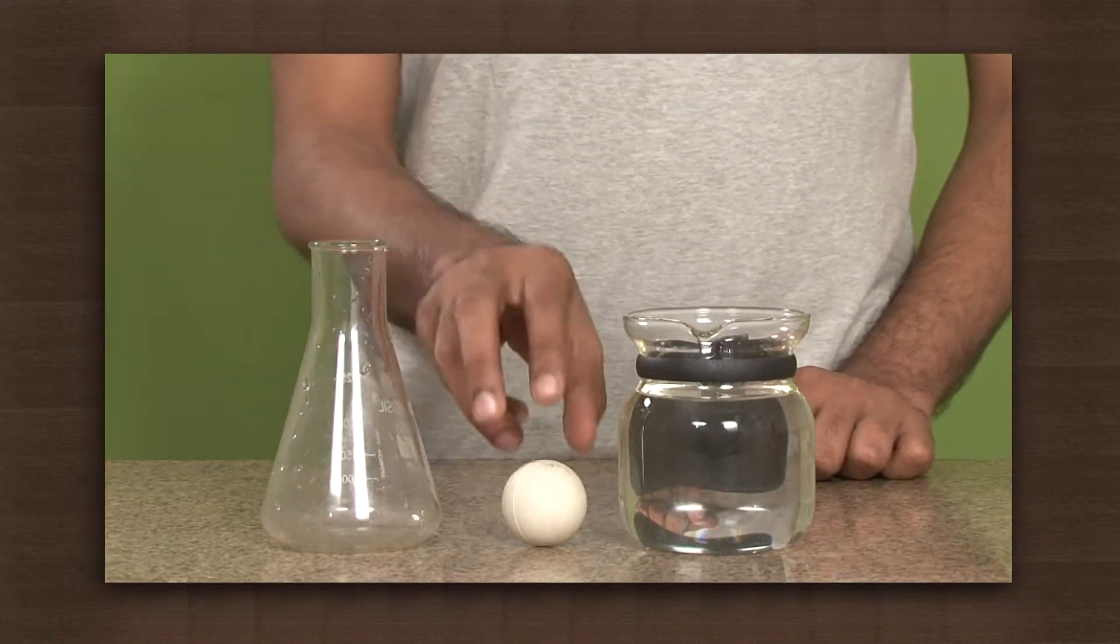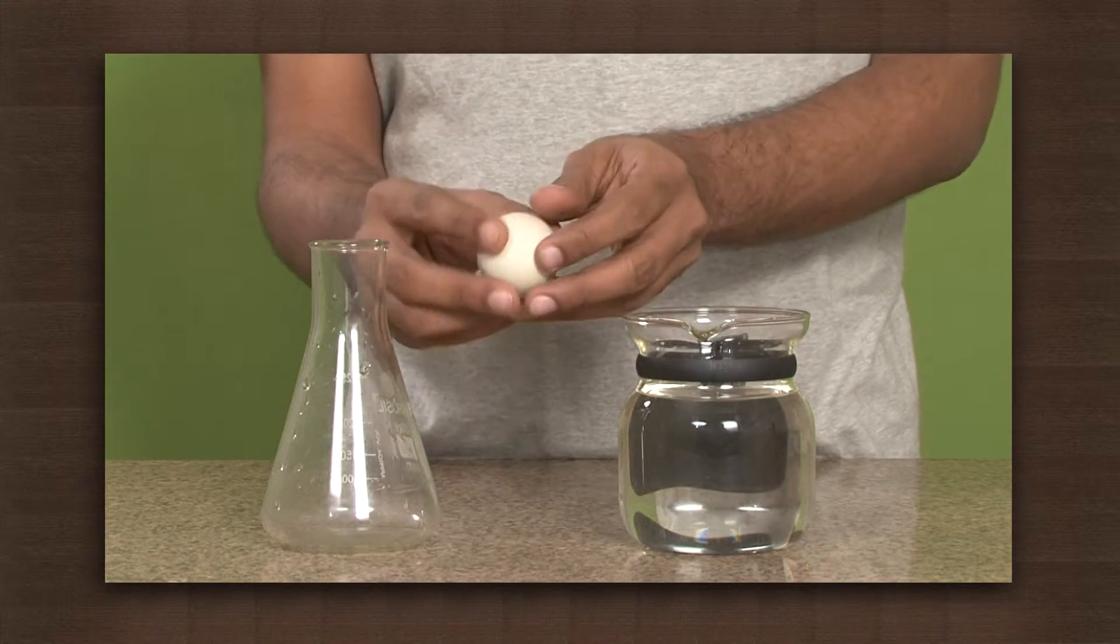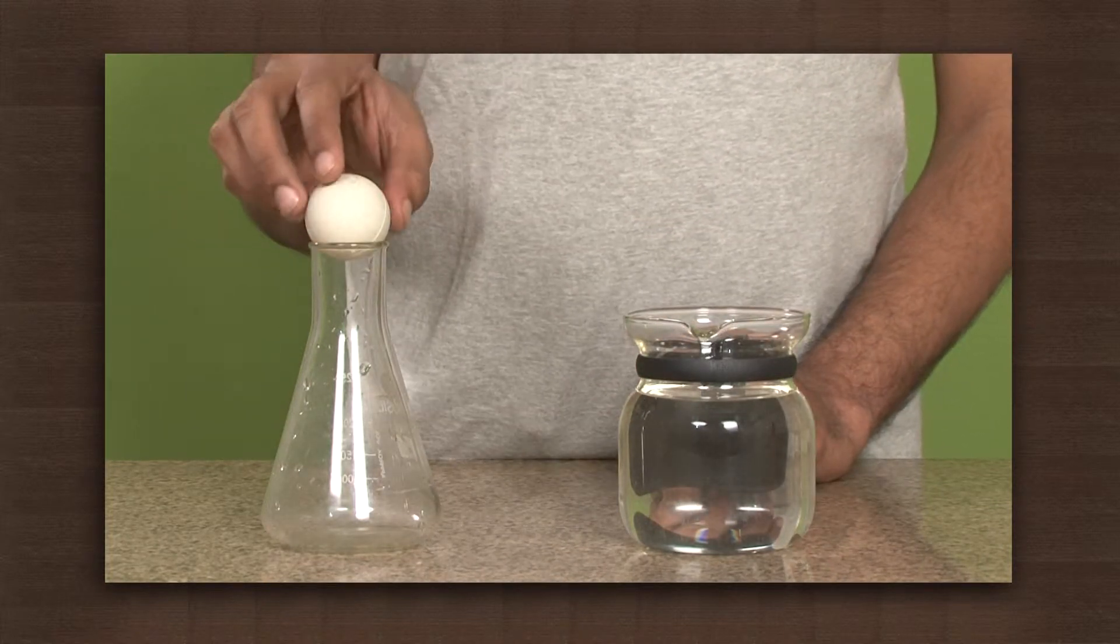We will take a wide mouth bottle or a conical flask, a plastic ball. Make sure the ball has a smooth surface and is bigger than the mouth of the bottle.